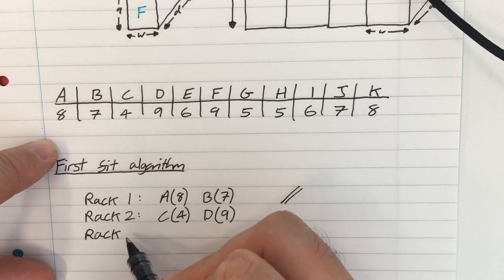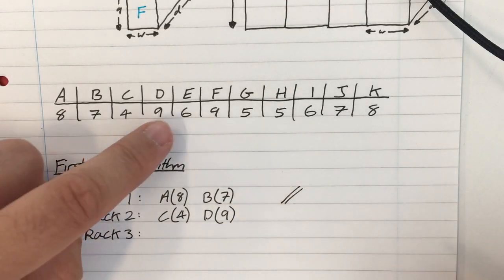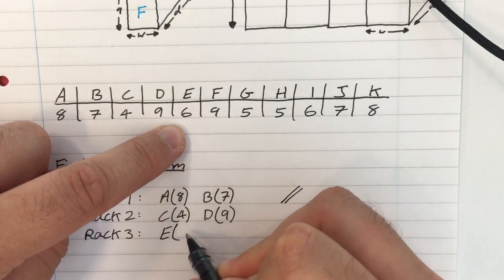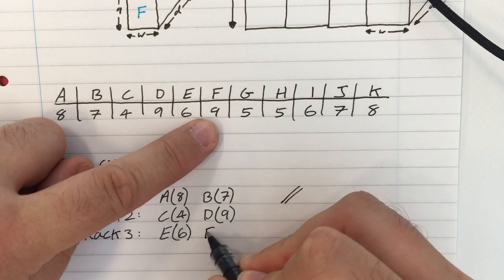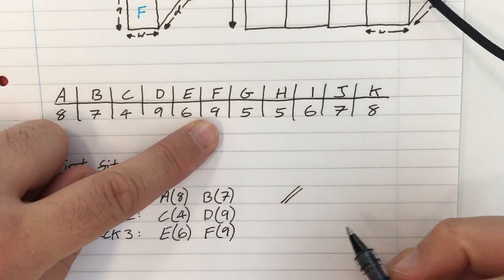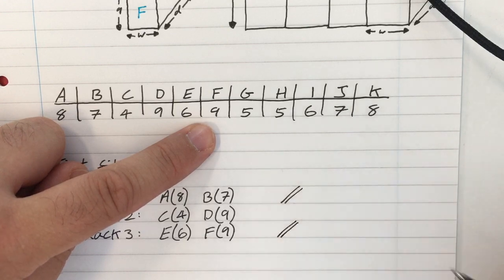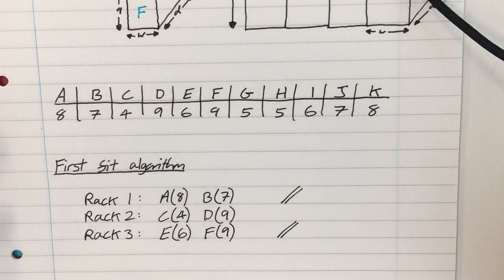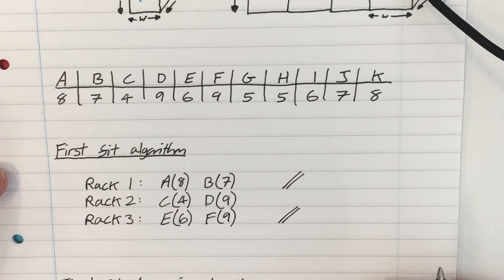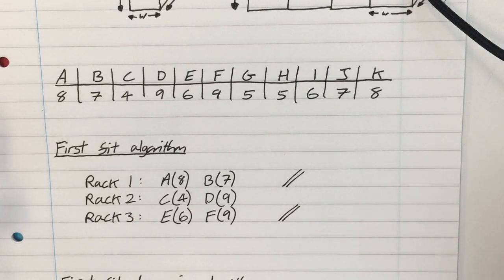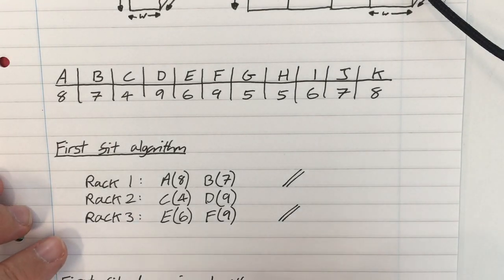It's not full, because there's still 2 spaces left. But none of these boxes have a height of 2 or less. So I know nothing else is going to fit in rack 2. So I pick up box E, and I've got to open up a third rack. So E is 6. Now F is 9. So I've picked up that and I've put it in rack 3. That's now a full rack, because 6 and 9 make 15.